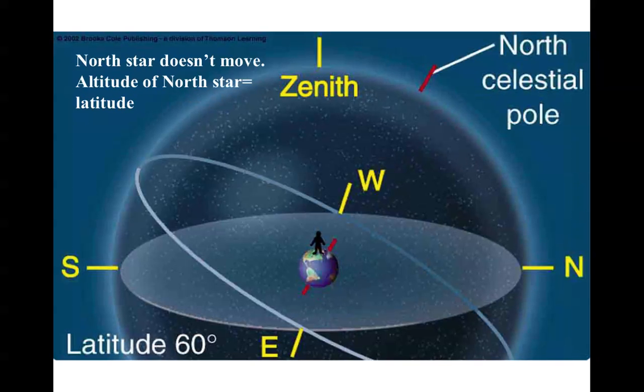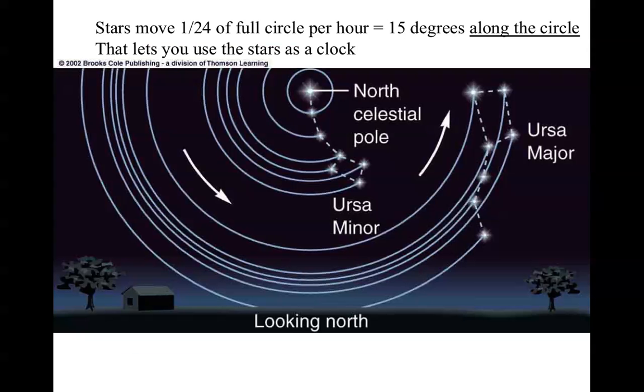As you march south from here, things start to change. When we get to, say, 60 degrees north latitude, the north celestial pole is now only 60 degrees above the north horizon. The stars continue to make circles about that point, but they don't stay at the same altitude anymore. So, here in this picture, we see what happens.